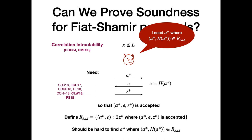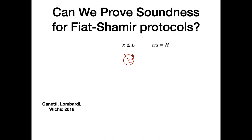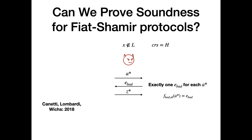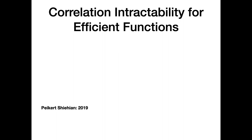I'll give a high-level overview of the last two works in this line. The first, by Canetti, Lombardi, and Wix, made important observations about classical interactive zero-knowledge protocols. They observed that we can get a protocol where if x is not in L, there is exactly one bad e for every a-star, meaning the relation r-sub-bad is actually a function. Moreover, with some modifications, this function is efficiently computable, making the requirements for the hash function much more specific and attainable.